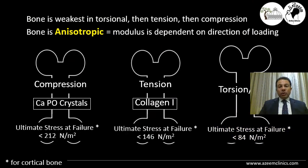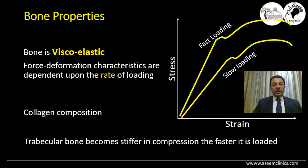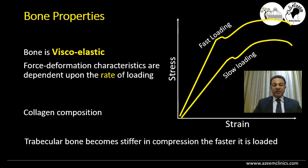Bone is weakest in torsion, then tension, then compression. This is what we name an anisotropic structure — meaning bone has different modulus of elasticity depending on the direction of loading. Bone is also a viscoelastic material, meaning it responds differently to the rate of loading. A common example is while reducing a pelvic fracture: if you load the bone rapidly it doesn't reduce, but it yields with slow loading, because of the organic collagen composition.